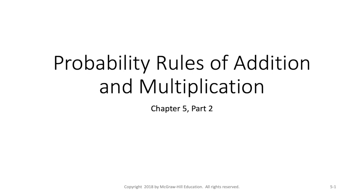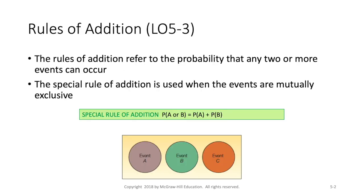So here with the rules of addition we're looking at the probability that any two or more events might occur. First we're going to look at what's called the special rule of addition and this one is used for experiments where our events are mutually exclusive.